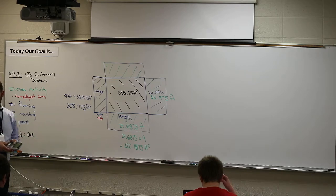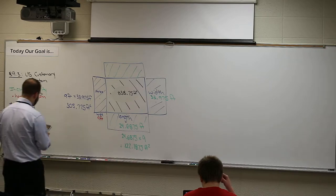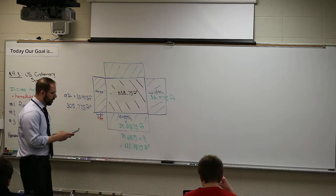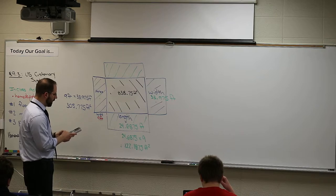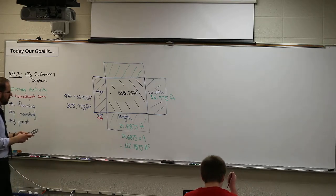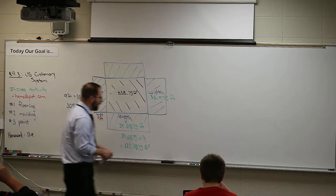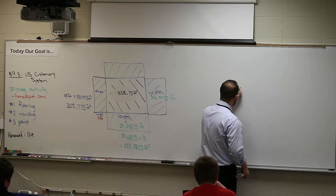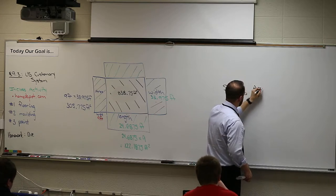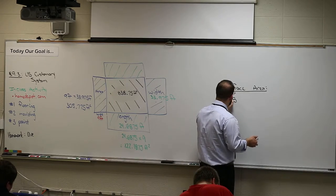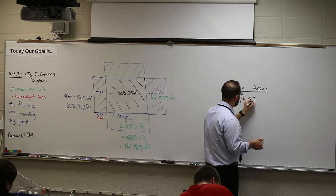We need to add all the surfaces together. So: 305.775 plus 305.775 for the two side walls, plus 222.1875 plus 222.1875 for the front and back, plus 838.76 for the ceiling. This is called surface area — you're adding up every surface of the entire room except for the floor, which is already covered with hardwood. The total surface area of this room is 1,894.675 square feet.